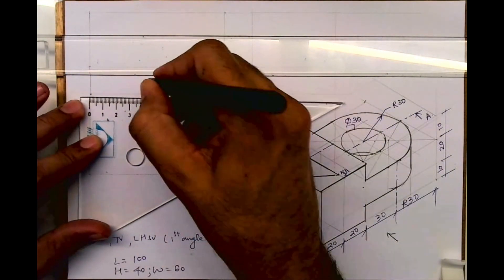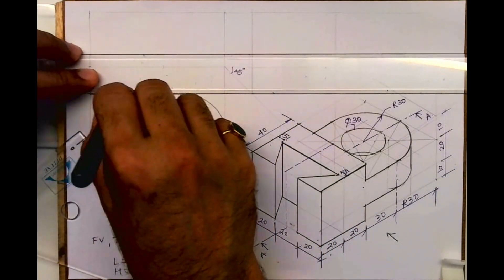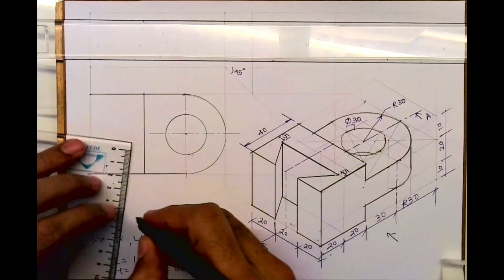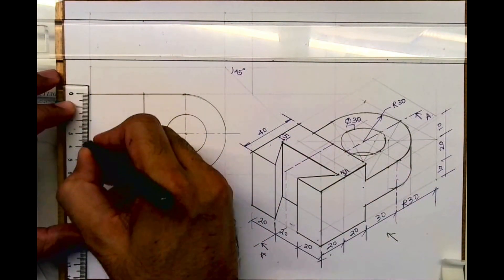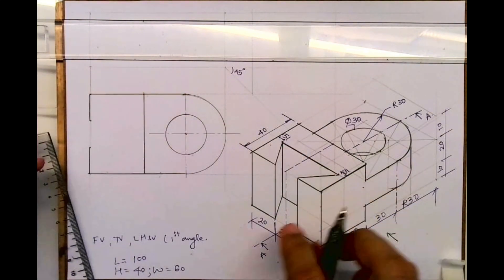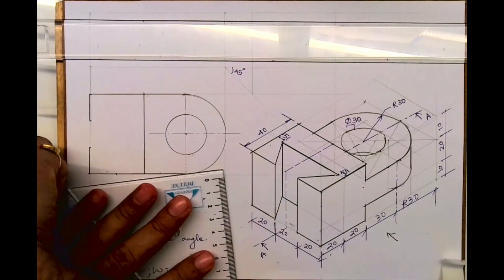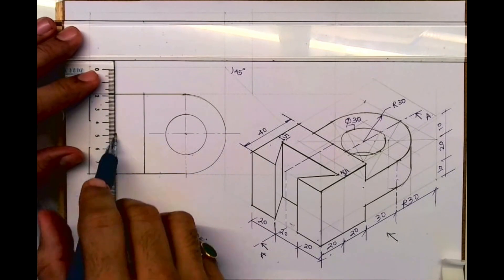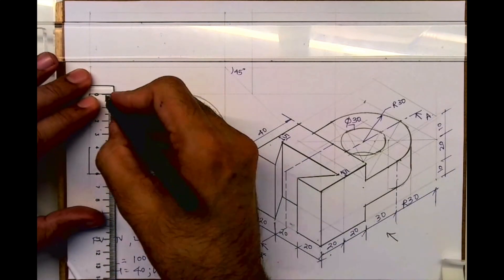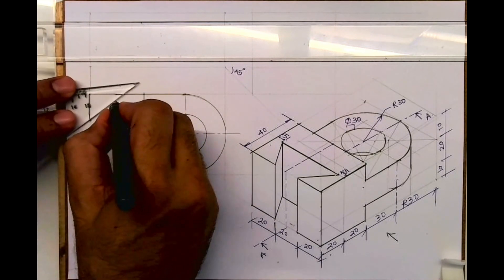This is 40, we'll draw vertical line, we'll extend this. Then this is 40, we'll draw vertical line, we'll extend this. And this is also 20 and this is also 20. We'll take five by on both the sides and you join this. So we are done with top view.